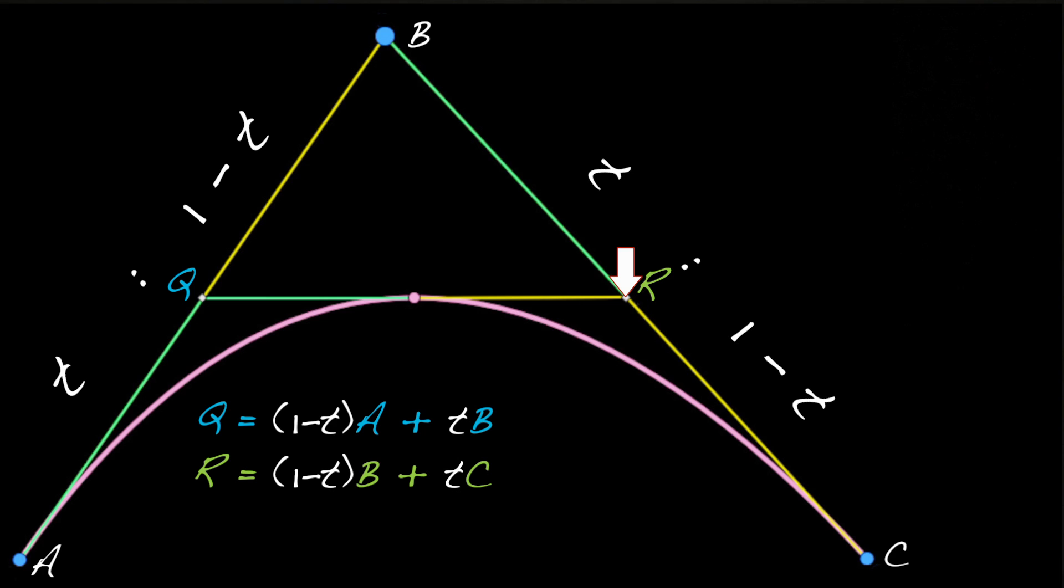Finally, we connect Q and R and do one final linear interpolation to get P, our point on the curve. P equals 1 minus T times Q plus T times R.